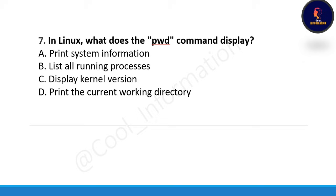Next question: in Linux, what does the pwd command display? Option A: print system information, Option B: list all running processes, Option C: display kernel version, Option D: print the current working directory. The correct option is D — print the current working directory.